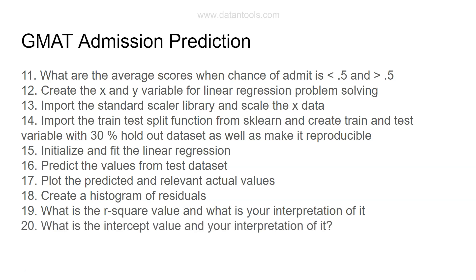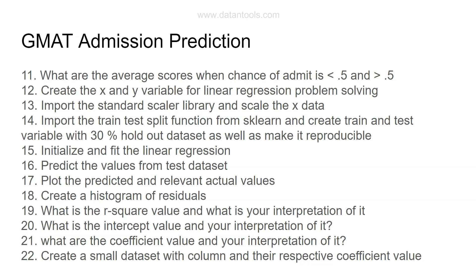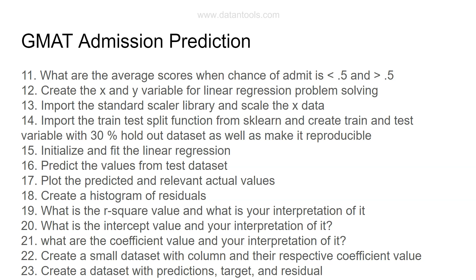Determine the R-squared value and write your interpretation. Then examine the intercept value and the coefficient values for each variable — there will be around five or six coefficient values. Interpret what each coefficient indicates. Finally, create a small dataframe with column names and their respective coefficient values — for example, GRE score coefficient, CGPA coefficient, etc. — so it can be used in a presentation. Also create a combined dataset with the predicted values, target values, and residuals.